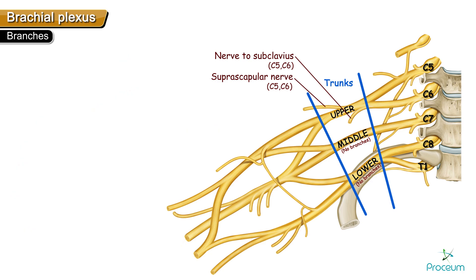The nerve to subclavius supplies the subclavius muscle and also gives off the accessory phrenic nerve. So the accessory phrenic nerve arises from the nerve to subclavius.